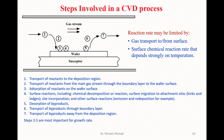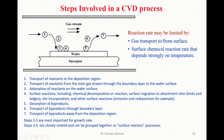Remember that steps two to five are most important for the growth rate. These are: transport of reactants from the main gas stream through the boundary layer to the vapor surface, adsorption of reactants on the vapor surface, surface reactions including chemical deposition, surface migration to attachment sites, incorporation, other surface reactions, and desorption of byproducts. Steps three to five are closely related and can be grouped together as the surface reaction process.